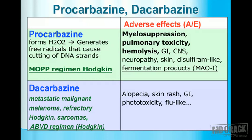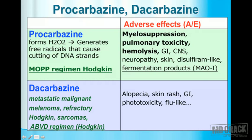Importantly, procarbazine has a disulfiram-like effect — alcohol intolerance — so patients must not consume alcohol while receiving it. Procarbazine also produces fermentation products that have MAO (monoamine oxidase) inhibitory action, leading to accumulation of amines and possible cheese reaction. Dacarbazine produces mainly alopecia, skin rashes, GI disturbances, phototoxicity, and flu-like symptoms. Procarbazine is in the MOPP regimen and dacarbazine is in the ABVD regimen for Hodgkin's.